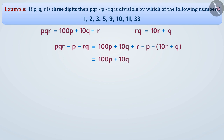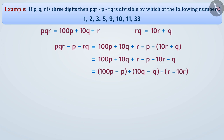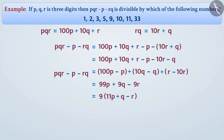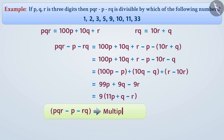This equals 100p plus 10q plus r minus p minus 10r minus q. We can rewrite this as 100p minus p plus 10q minus q plus r minus 10r, which on solving gives 99p plus 9q minus 9r, that is 9 times (11p plus q minus r).